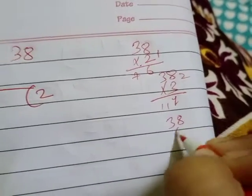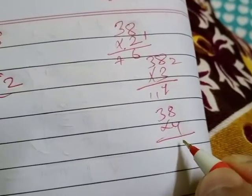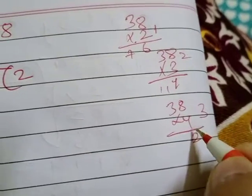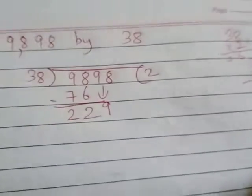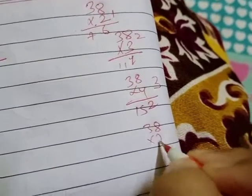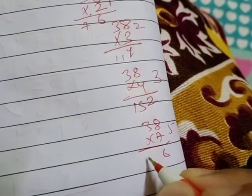38 into 4: 4 8s are 32, carry 3, 4 3s are 12, giving us 152. But we want 229, so let's try 38 into 7: 7 8s are 56, which gives 266. That's too much.